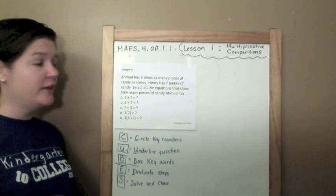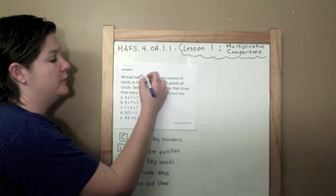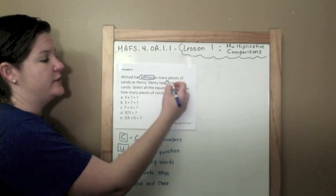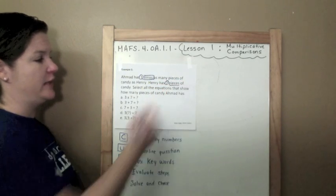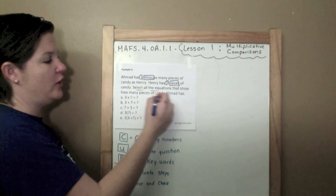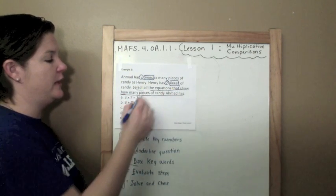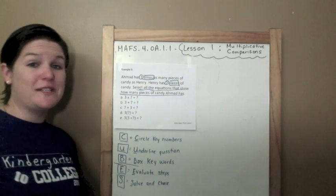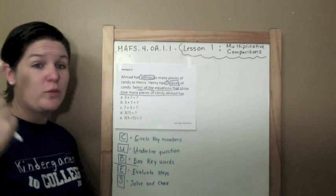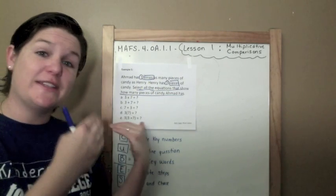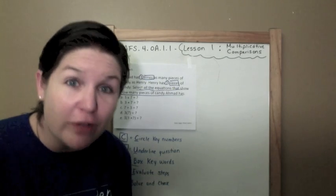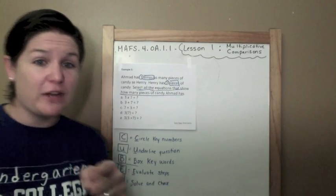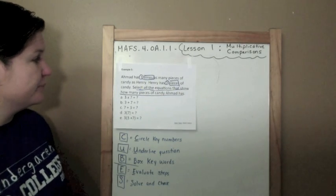Example five. Ahmaud has three times as many pieces of candy as Henry. Henry has seven pieces of candy. Select all the equations that show how many pieces of candy Ahmaud has. Select all. This is a multi-select, which means there's probably going to be more than one correct answer. And in order to get these types of questions right, you need to pick all of the correct answers. If you only pick some of the correct answers, you're going to get it wrong. So read it carefully.